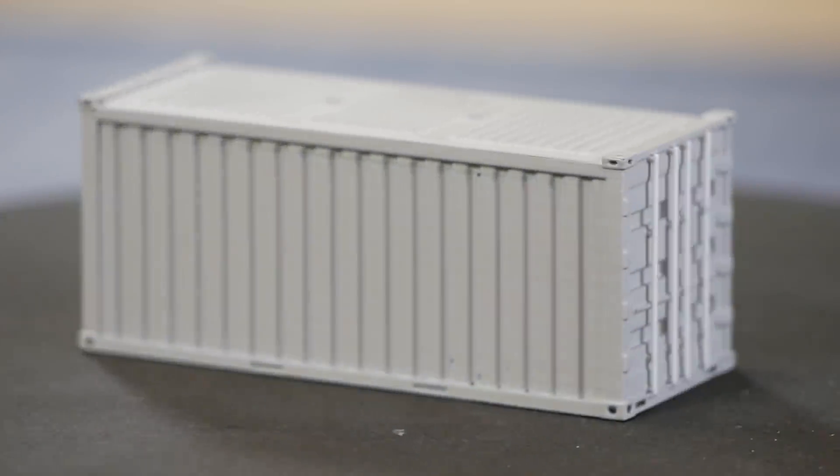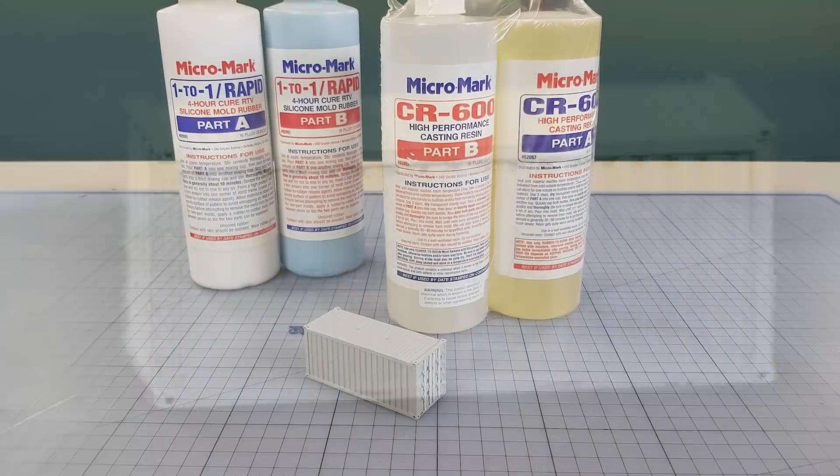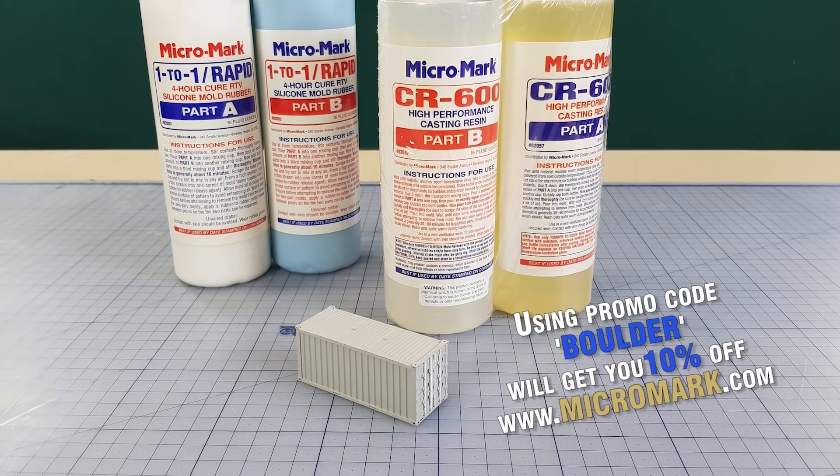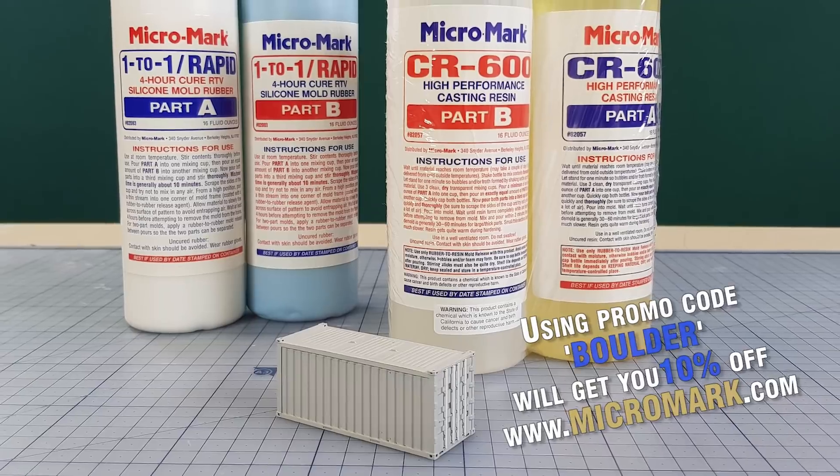Once finished you can paint the model as you would any other plastic model kit. Or what I'll be doing with this model is creating a rubber mould so I can make multiple copies of this quickly and easily using cheaper faster setting resin.